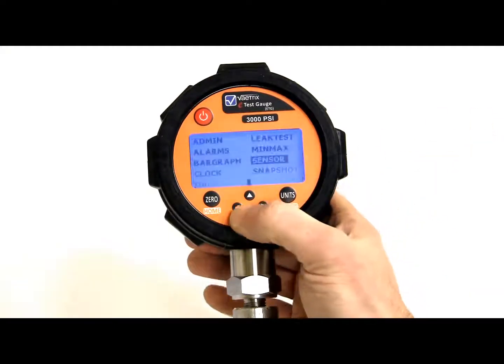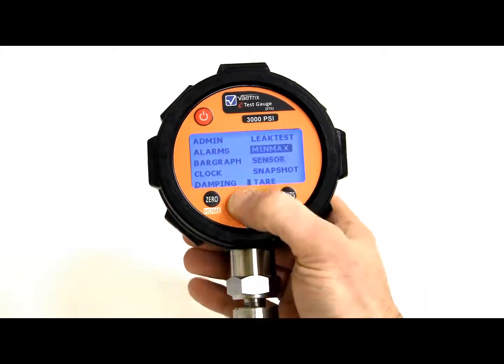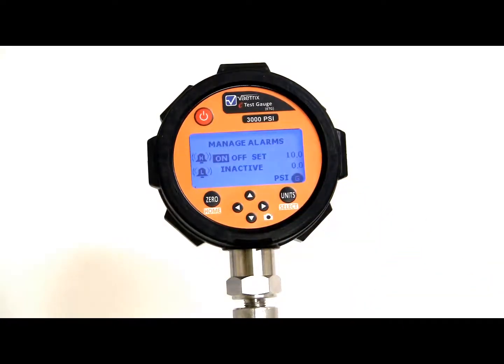Alright, so let's dive into alarms since you saw the screen turn red and flash alarms. So right now, I have an on high alarm set at 10 psi. Notice, when I went to absolute mode, which is around 14 psi, the alarm trips.